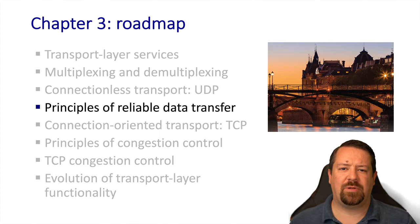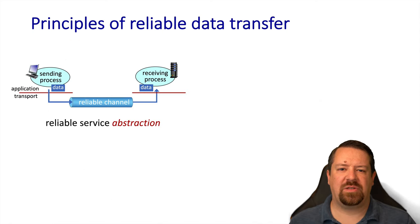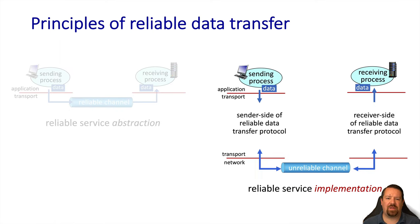So far, we've seen both that reliable data transport protocols exist, but also that the underlying network is not reliable. The service being provided by the reliable transport protocol allows two processes on different hosts to communicate with one another as if they are directly connected. However, this service is being implemented on top of an unreliable channel, leaving the transport protocol to provide the reliability on top of that channel.